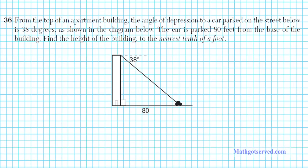For problem 36, this is an application of right triangle trigonometry. From the top of an apartment building, the angle of depression to a car parked on the street below is 38 degrees, as shown in the diagram. The car is parked 80 feet from the base of the building. Find the height of the building to the nearest tenth of a foot. We have a right triangle here — this angle is 90 degrees.